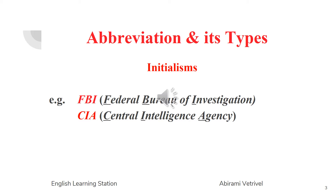For example, FBI and CIA are examples of initialisms because they are made up of the first letters of Federal Bureau of Investigation and Central Intelligence Agency. But remember, in initialism, we do not pronounce them as a word — we individually pronounce every letter of the abbreviated term. We only say FBI and CIA and no new word is coined out of it. So this is what we mean by initialism.